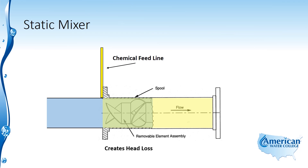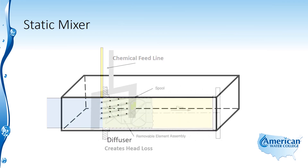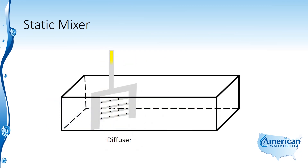Another type is the diffuser mixer, where the coagulant is diffused through holes in pipes throughout the flow channel, distributing the coagulant across the flow channel.